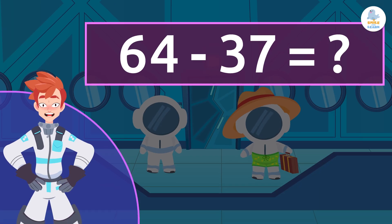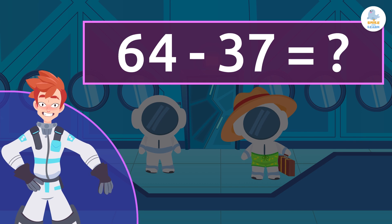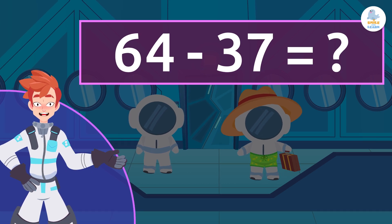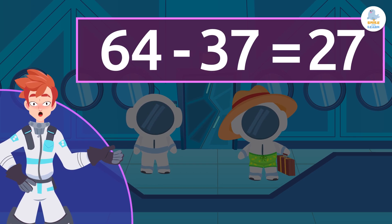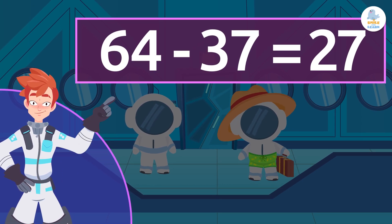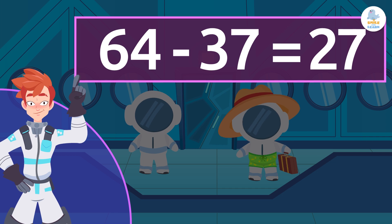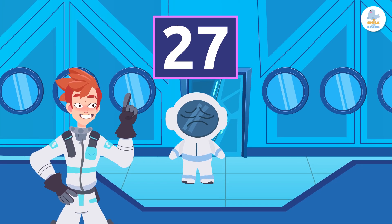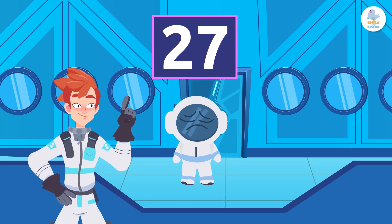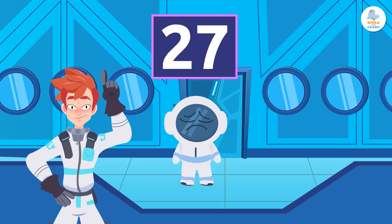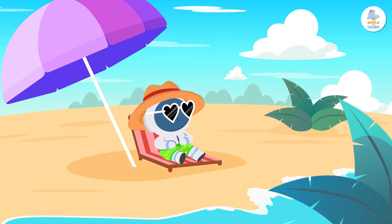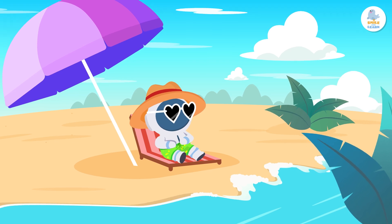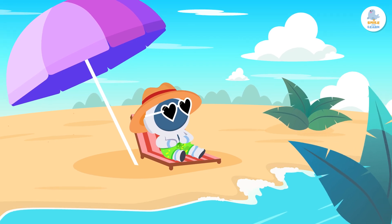So, 64 minus 37 equals 27. 27 astronauts are left on the space station. I'm sure the others are having a great time on vacation!